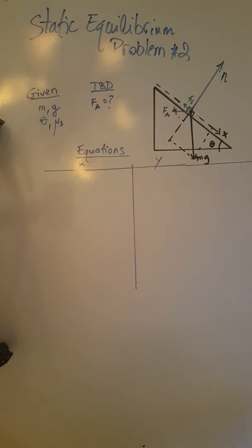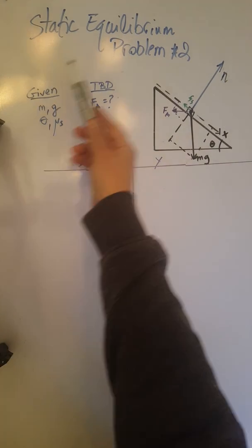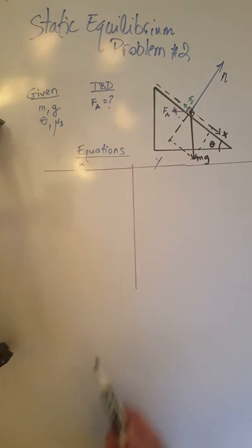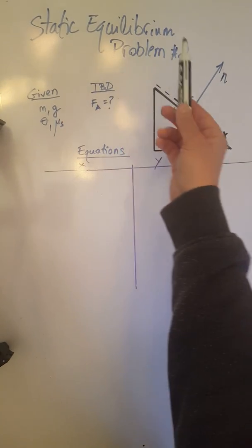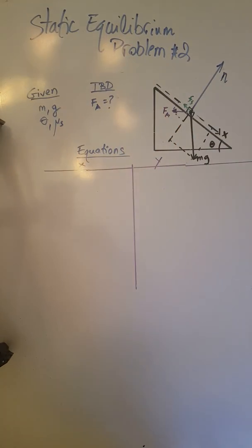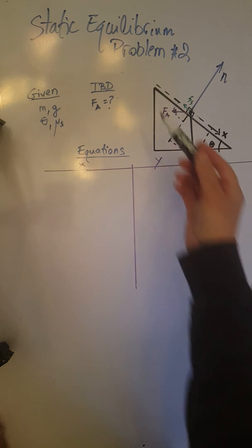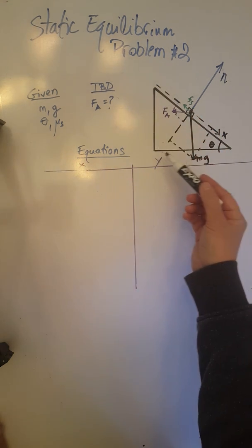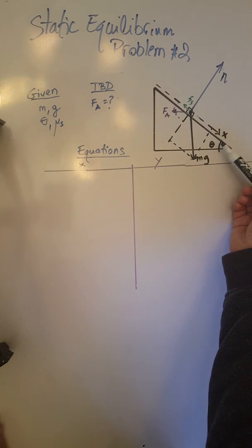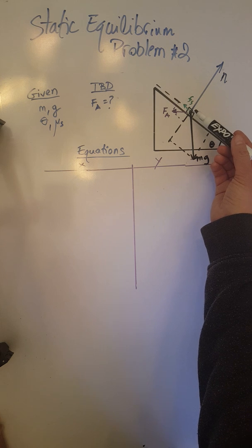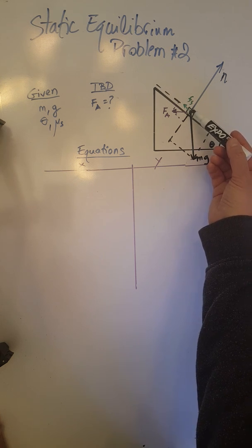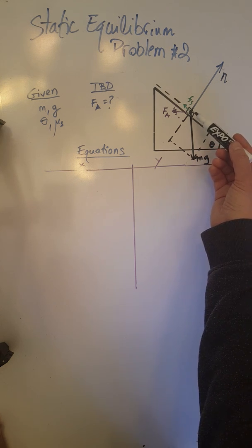Hello again, and we are now going to solve another static equilibrium problem — this is static equilibrium problem number two. What we have in this problem is an inclined plane of inclination theta and an object on this inclined plane that is in static equilibrium.